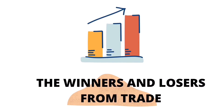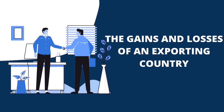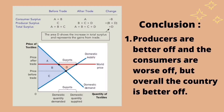Now I will explain the gains and losses of an exporting country. This figure shows the Isolandian textile market when the domestic equilibrium price before trade is below the world price. Once trade is allowed, the domestic price rises to equal the world price. No seller of textiles would accept less than the world price.